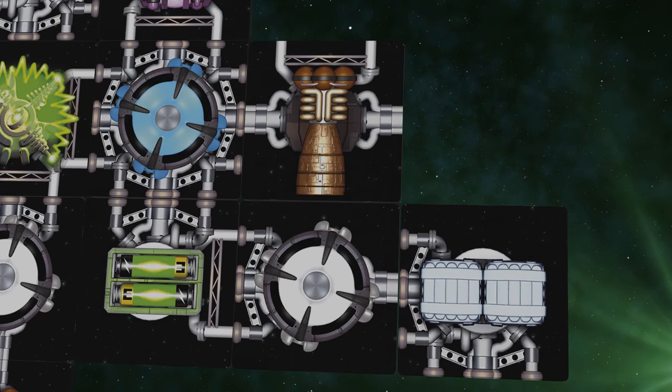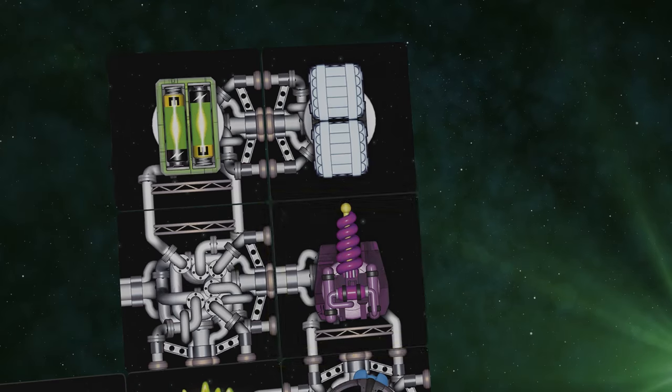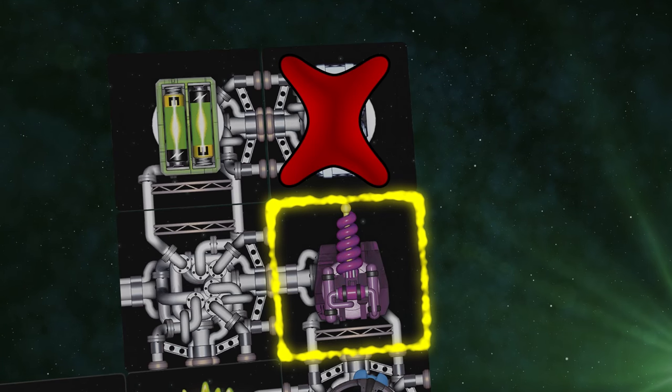3. This engine has a component directly behind it. 4. This cannon has a component directly in front of its barrel.